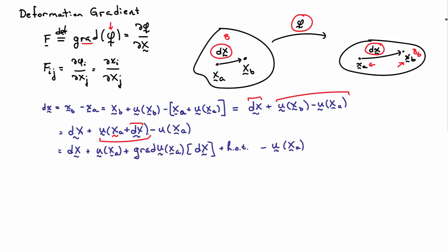If I do that, I'll have U of XA as the first term, and then I'm going to have the first derivative of U times the difference, so that will be the gradient of U evaluated at XA applied to DX. And then there will also be higher order terms, quadratic, cubic, et cetera.